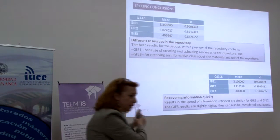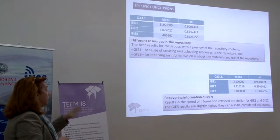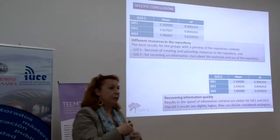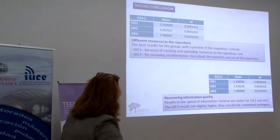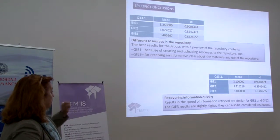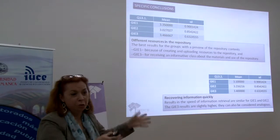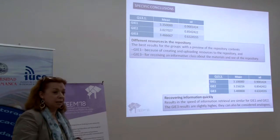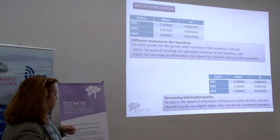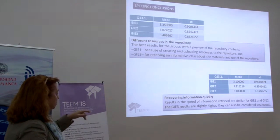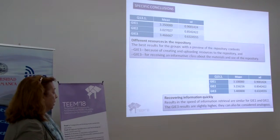The specific conclusion of the survey, with respect to the question about whether students could identify all or get a general idea of the different resources in the repository, showed that the best results were obtained for the first and third groups. In the first case, students had created the resources and knew what was included. In the third case, they had received a previous explanation. The results for quickly recovering information from the repository were good for both the first and second groups.